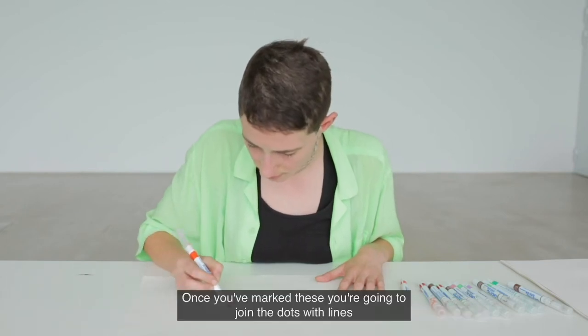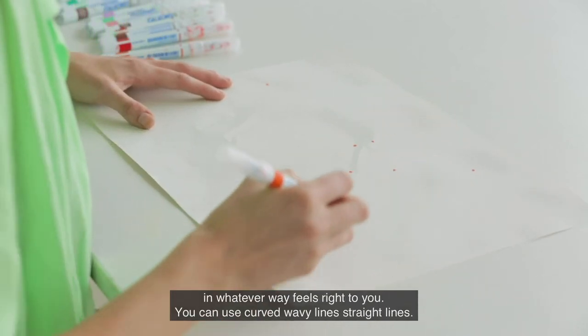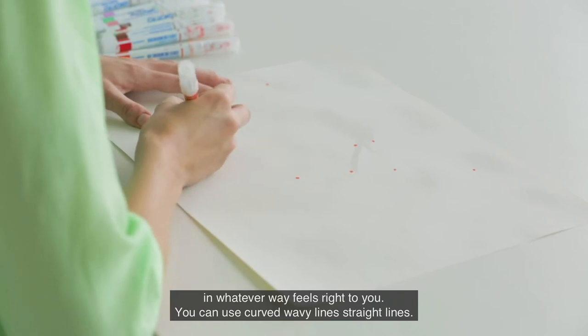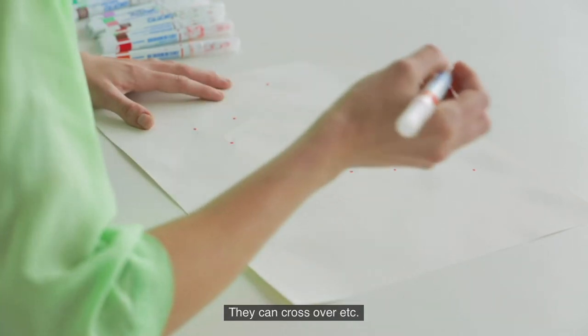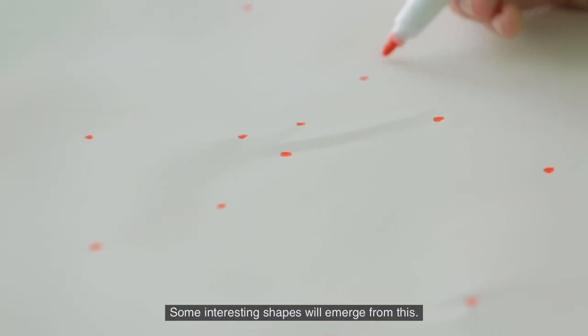Once you've marked these, you're going to join the dots with lines in whatever way feels right to you. You can use curved wavy lines, straight lines—they can cross over, etc. Some interesting shapes will emerge from this.